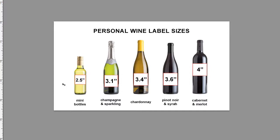The square format is the only format that will work universally across all these different bottle sizes. We start you out when you design your label at this 4 inch square range, then we can scale down to 3.6, then 3.4, then 3.1 on champagne, and 2.5 on mini bottles.